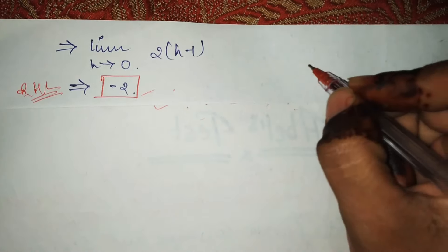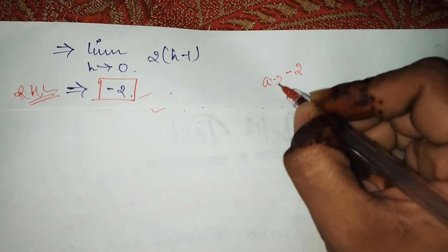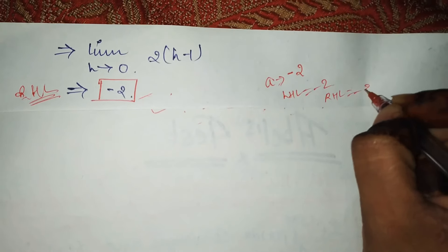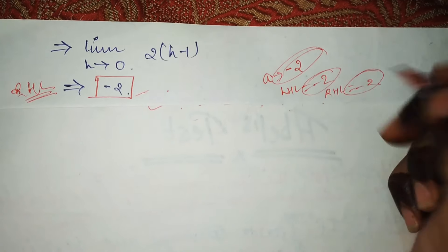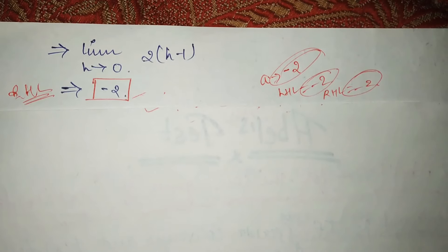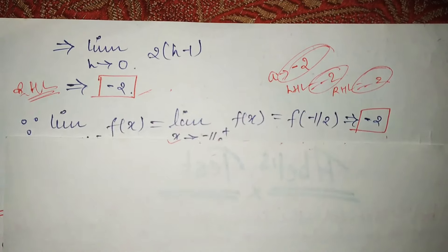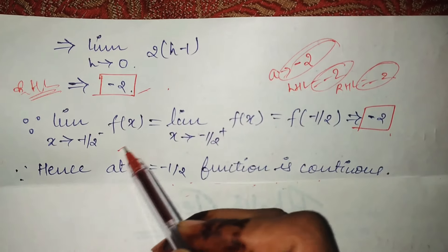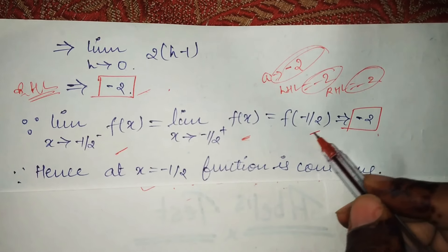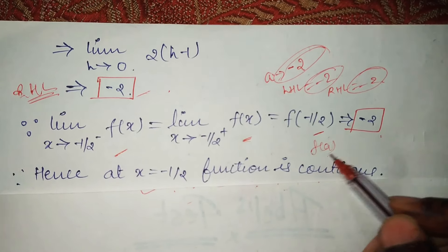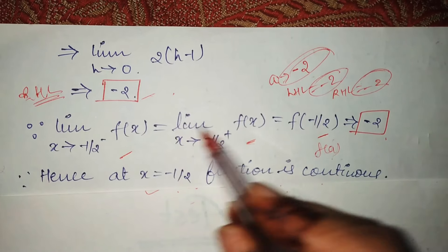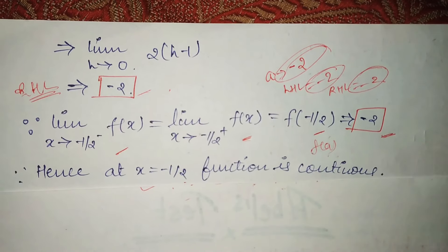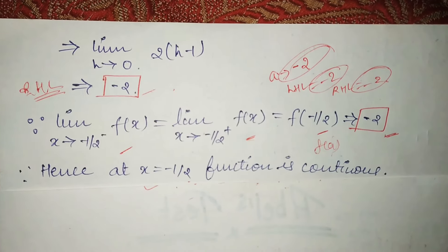So as we can see: the value given in the function for A was minus 2, the left hand limit is minus 2, and the right hand limit is also minus 2. All three values are the same, so our condition is fulfilled. This means the function is continuous. Write the statement: the left hand limit = right hand limit = f(a) = minus 2 at the point x equals minus 1 by 2, therefore the function is continuous.